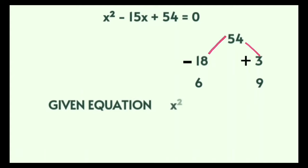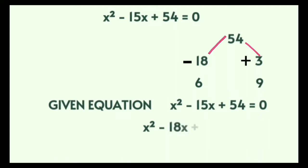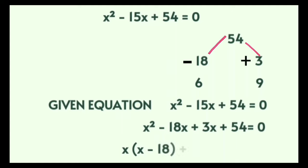Let's solve the equation using the previously explained steps. The given equation x squared minus 15x plus 54 equals 0, after writing the factors in place of minus 15x, becomes x squared minus 18x plus 3x plus 54 equals 0. Taking common factors in the second step gives x in bracket x minus 18, plus 3 in bracket x plus 18, equal to 0.